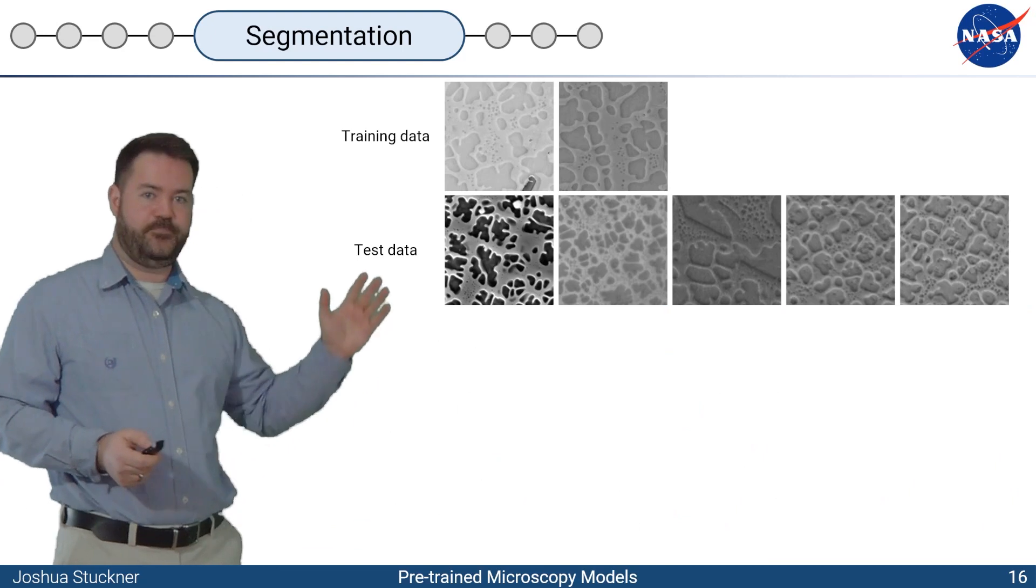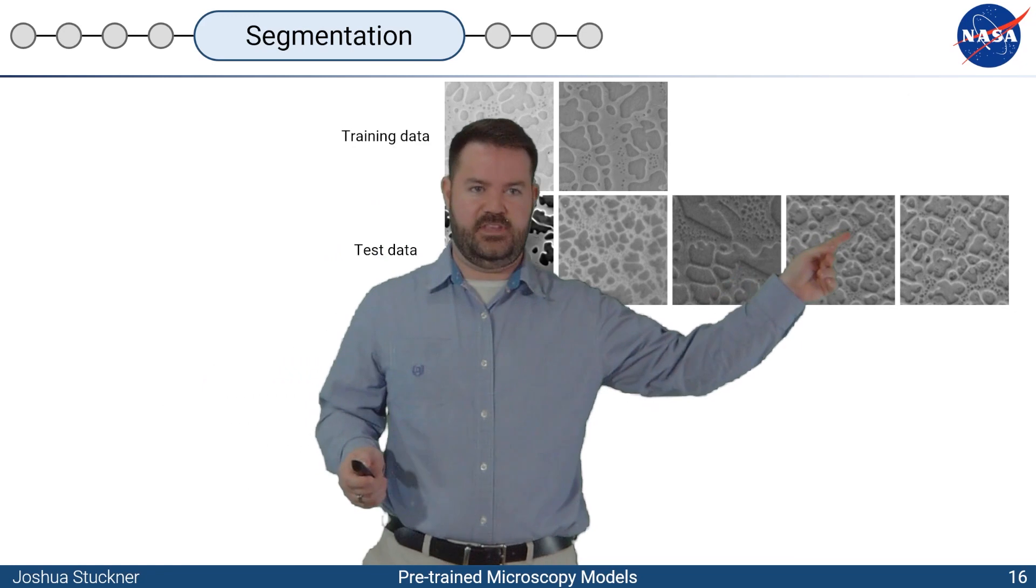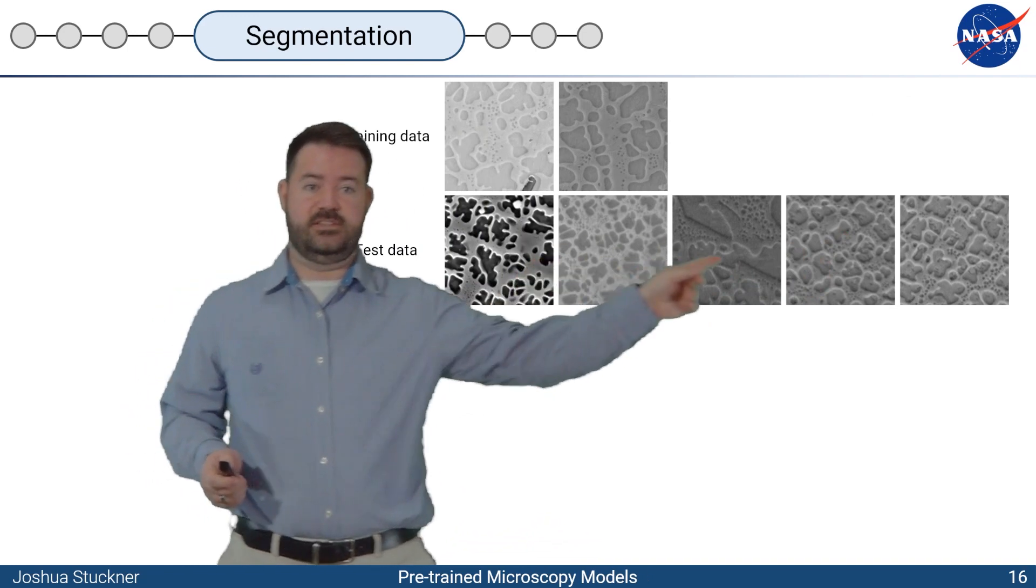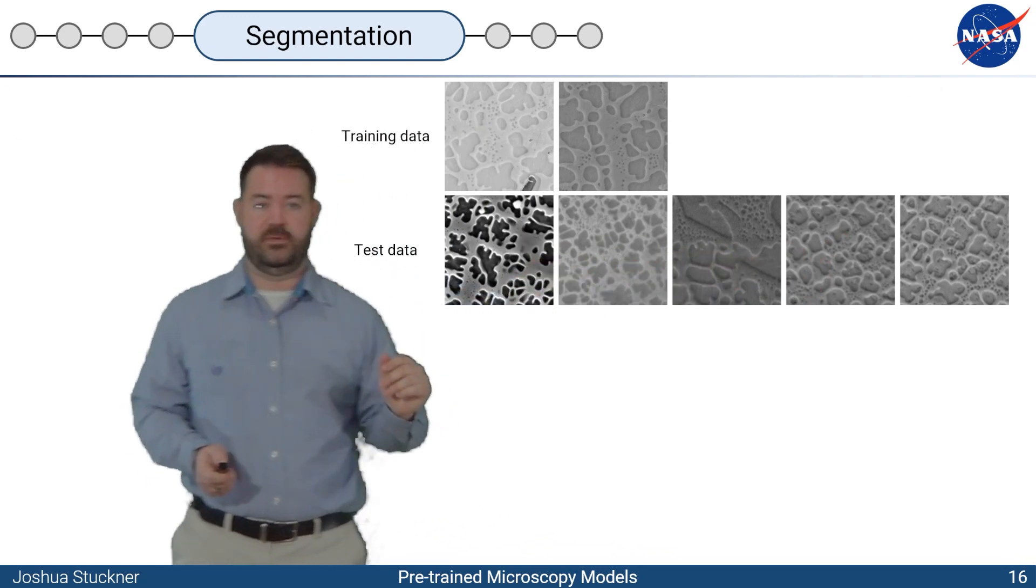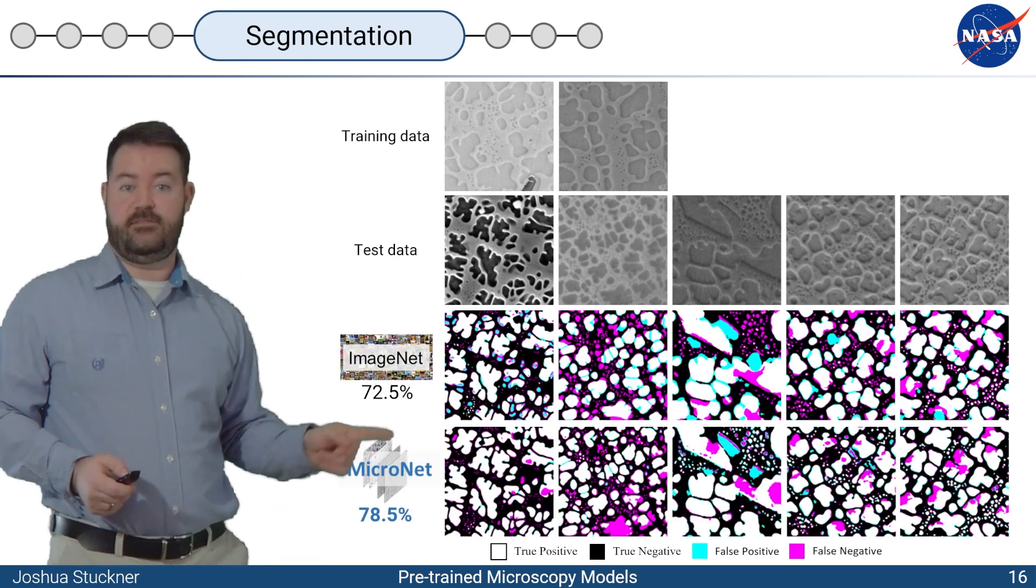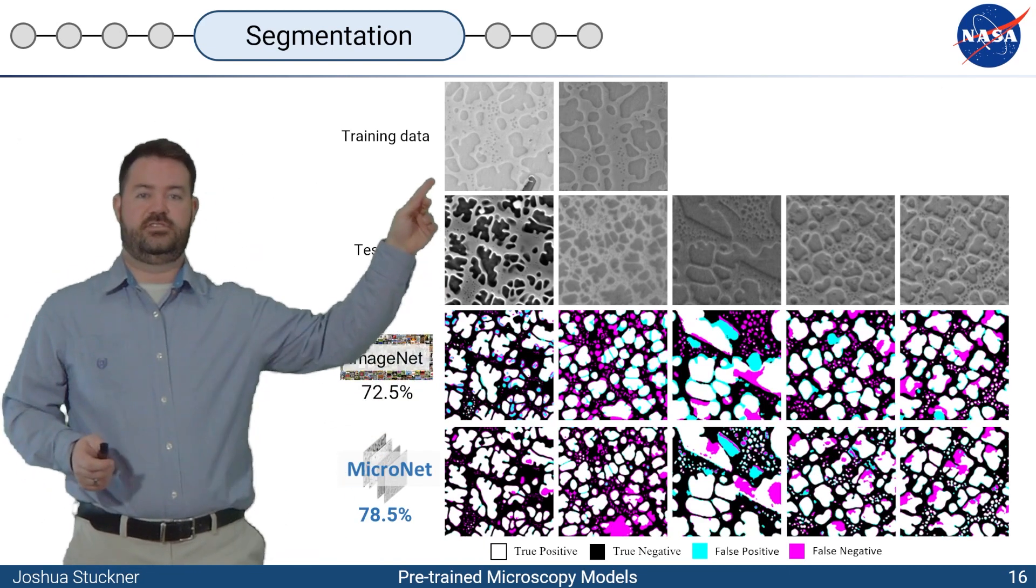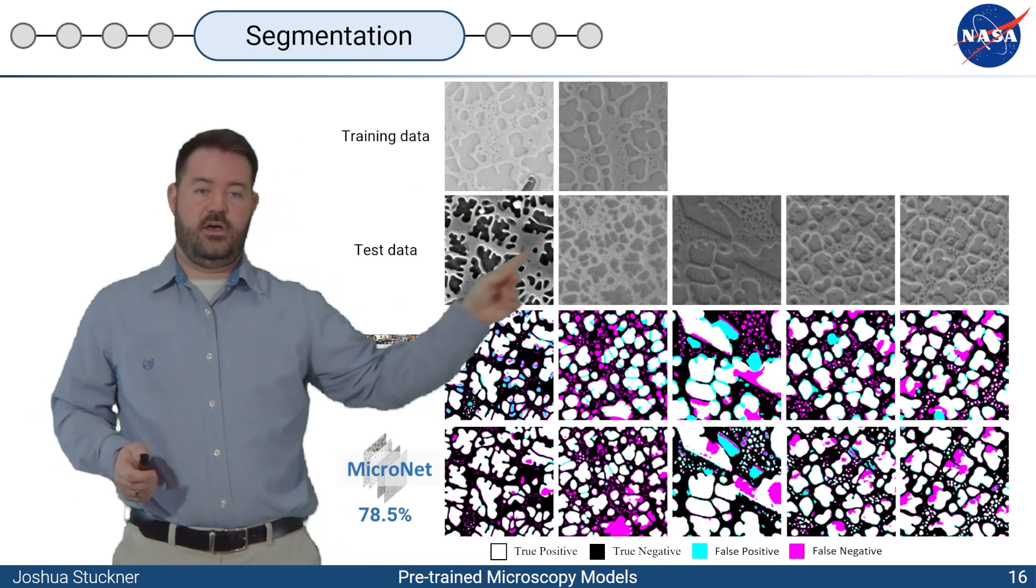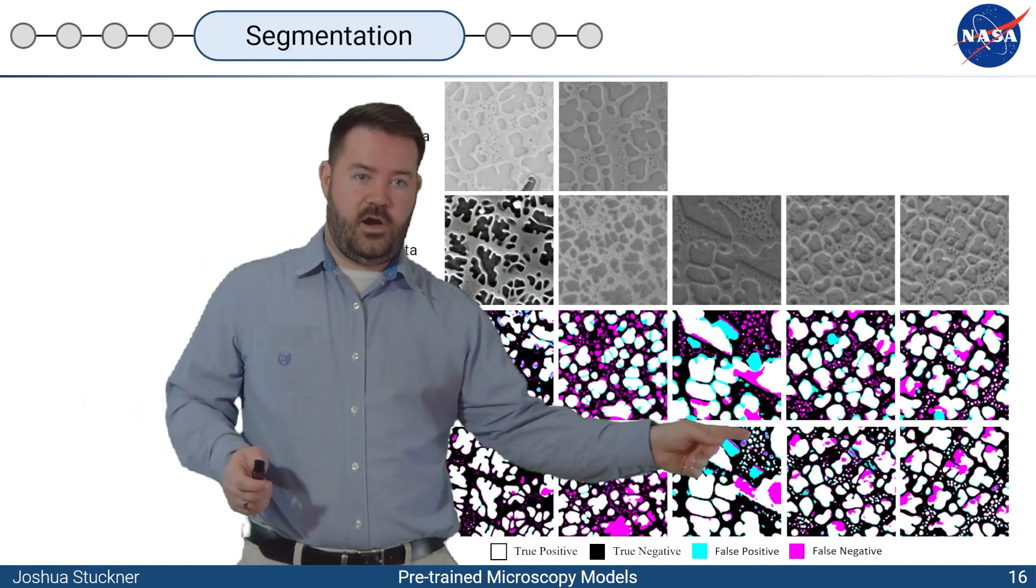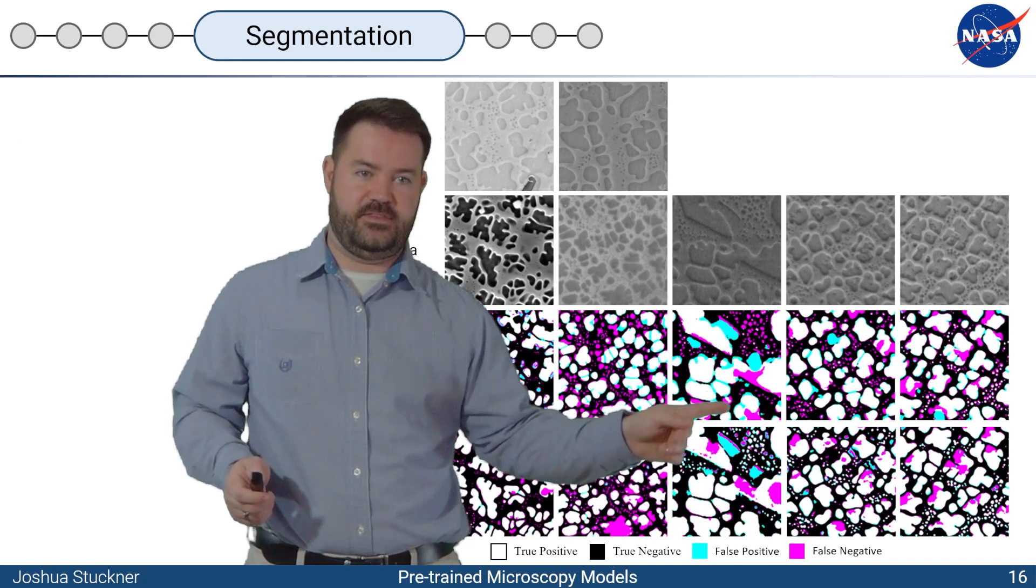For the last experiment, we tested way out of distribution data. Maybe different etchings were used. We have different imaging conditions. This is a completely different alloy, still a super alloy, the Nickel-based super alloy. And we look at the results. ImageNet, 72%, whereas Micronet gives us a 78% accuracy, quite a significant jump, especially since these are so different from our training sets. The fact that we're still getting pretty good results is frankly astonishing.